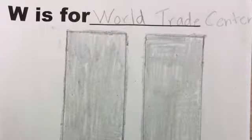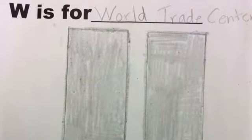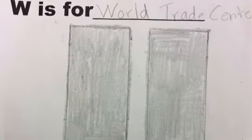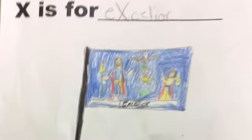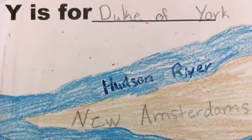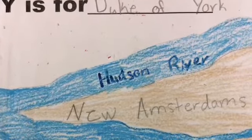W is for World Trade Center because it was built to revitalize international trade. X is for Excelsior because Excelsior means ever upward, the appropriate motto for New York State. Y is for Duke of York, from whom the state is named.